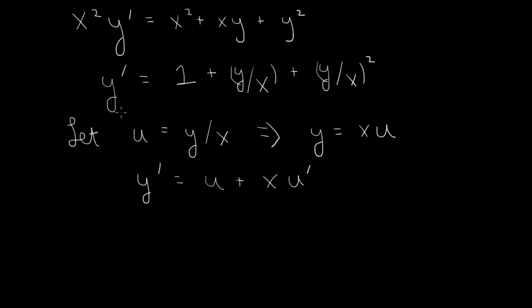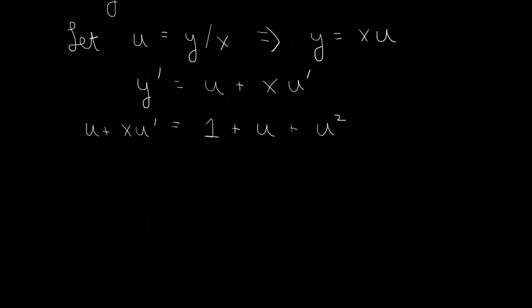Okay, so this is y prime here, y over x is u. So substituting into the differential equation, we have u plus x u prime equal to 1 plus y over x is u, plus y over x squared is u squared. So this becomes our differential equation for u.